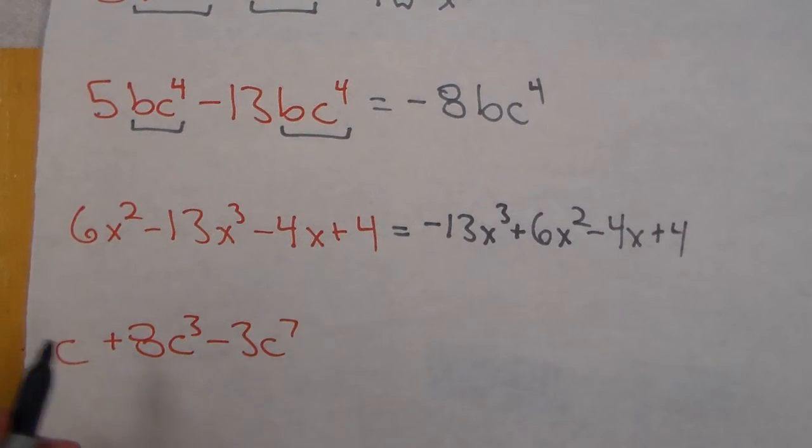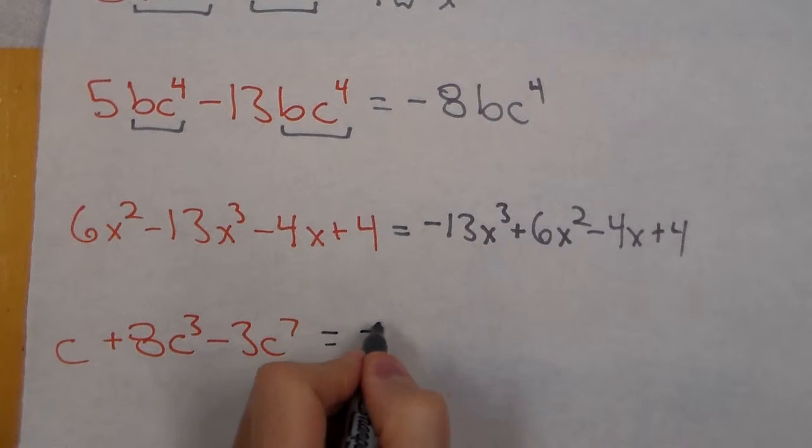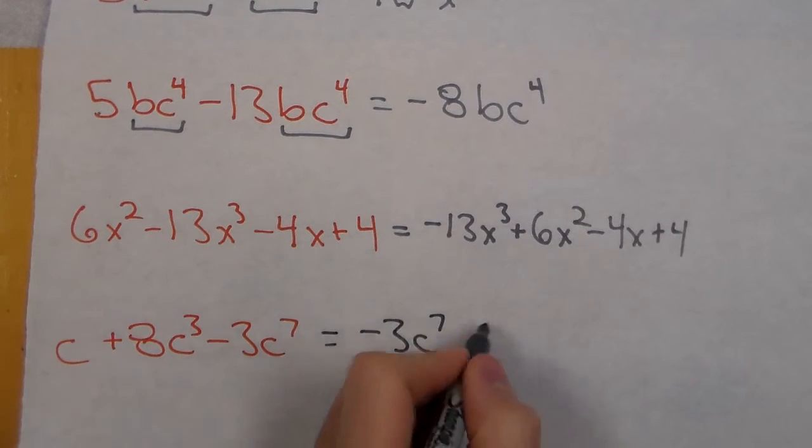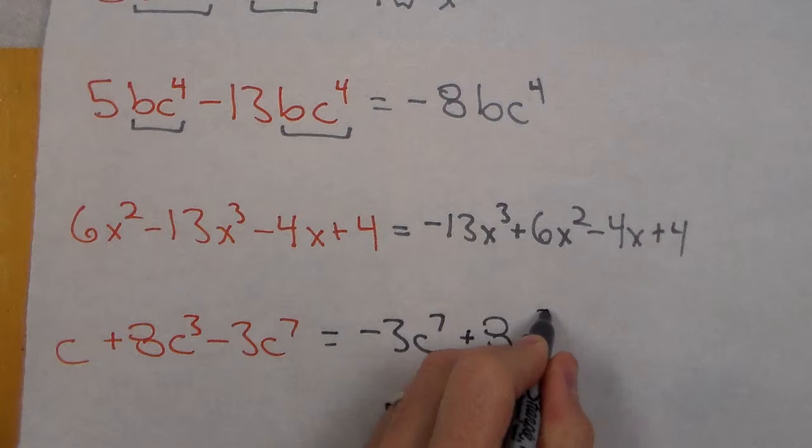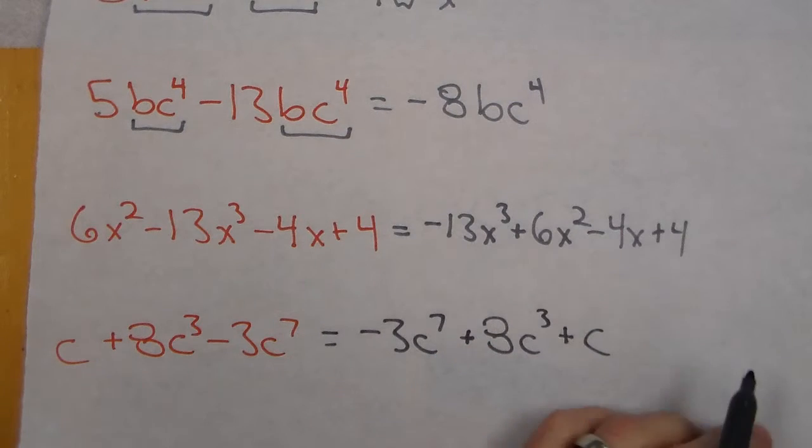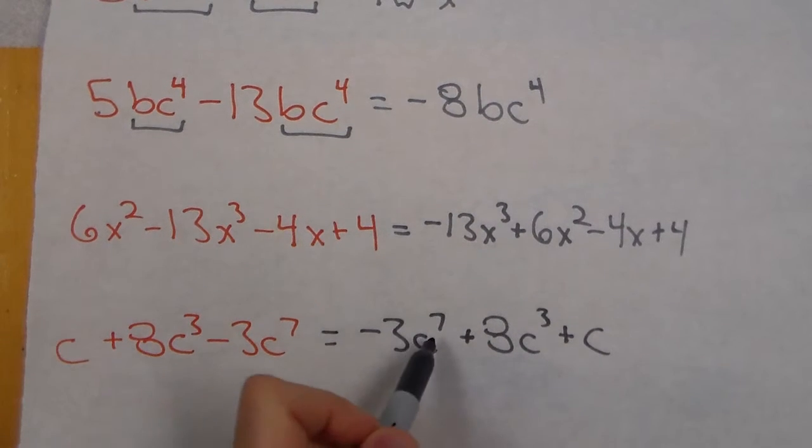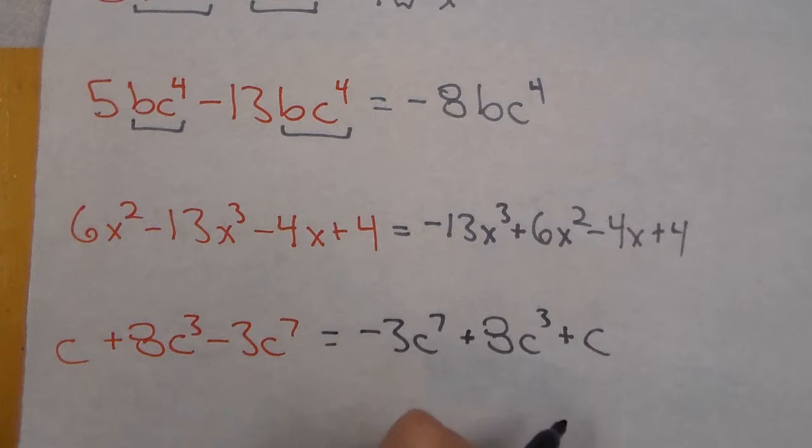If we now look at something like this, again we need to make sure it's negative 3c⁷ first plus 8c³ plus c. No like terms. That is a seventh degree polynomial because your largest exponent is the seventh.